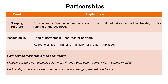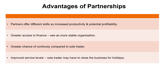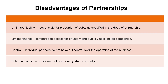Partnerships are more stable than sole traders, with greater finance and a greater chance of surviving changing market conditions. Focus on productivity and potential profitability — with multiple people bringing different skills, the business can be more productive and efficient, leading to potentially higher sales and higher profits. The main disadvantage to emphasize is control: if you grow from a sole trader into a partnership, you go from 100% control to having to discuss decisions with partners, which could create a clash of cultures.